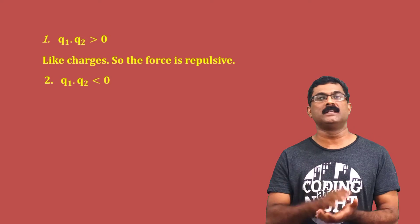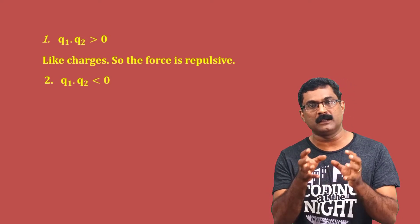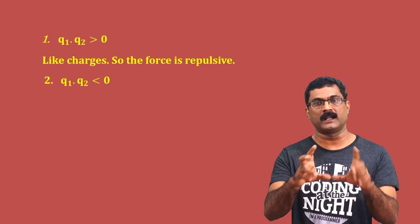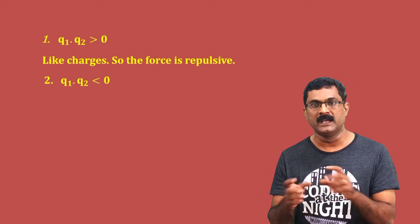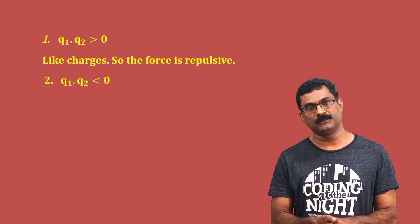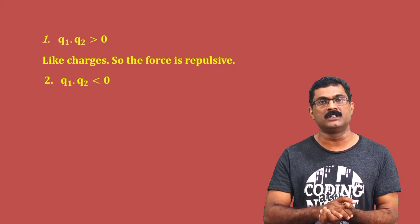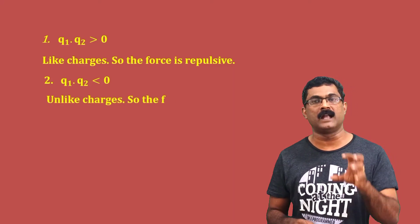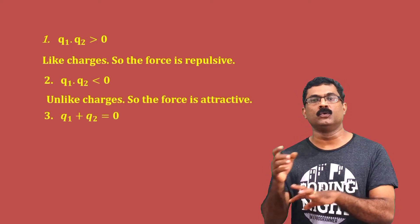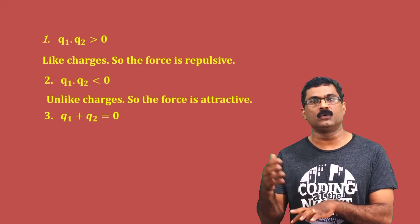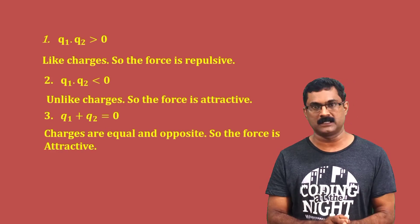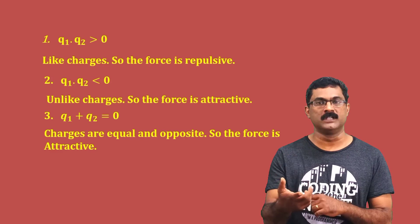If Q1 into Q2 is less than zero, the product is negative, meaning one charge is positive and one is negative — they are unlike or dissimilar charges. One more question: if Q1 plus Q2 equals zero, it means Q1 equals minus Q2 — they are equal and opposite charges, so the force is attractive.